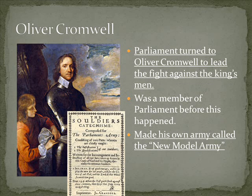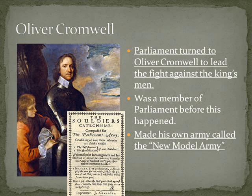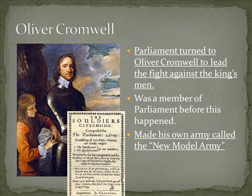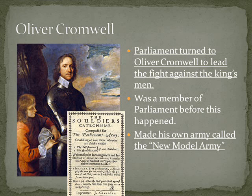Oliver Cromwell was a member of Parliament, and he had some experience with military things. He quickly got to work getting an army built together called the New Model Army and prepared to go fight the king. This New Model Army was an army that he was primarily responsible for training and getting ready. Parliament helped him raise money to provide them weapons, and Cromwell was determined to take the fight to the king in a big way.